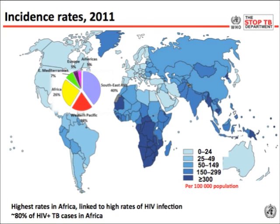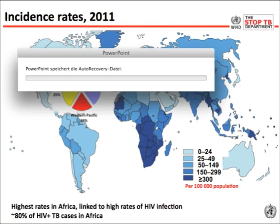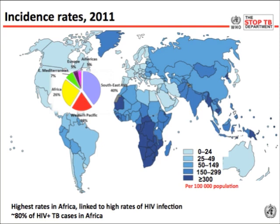This slide gives a more precise idea of the incidence of tuberculosis country by country. In dark blue are countries with more than 300 cases per 100,000 population. In some parts of Africa — South Africa, Botswana, Swaziland, Lesotho — the rate reaches 1%, meaning 1,000 per 100,000. In Western Europe it is normally in the range of 5 to 15 cases per 100,000. In Asia, rates are intermediate, between 50 and 150 per 100,000.